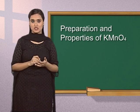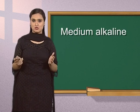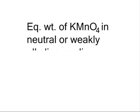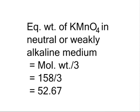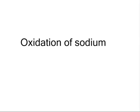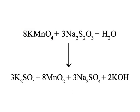During the course of reaction, the alkali renders the medium alkaline even when starting with neutral solutions. Hence, the equivalent weight of potassium permanganate in neutral or weakly alkaline medium is 52.67, obtained by dividing the molecular weight by 3. For example, oxidation of sodium thiosulfate to sodium sulfate: potassium permanganate reacts with sodium thiosulfate and water to form potassium sulfate, manganese oxide, sodium sulfate and potassium hydroxide.